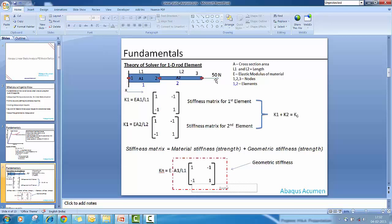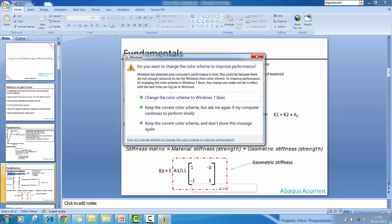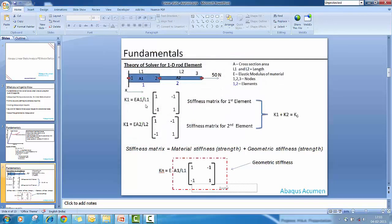When you define this problem into finite element environment, it creates a stiffness matrix for each element. Element number one is in blue. For element one, we have this stiffness matrix: EA1/L1 times the matrix [1, -1; -1, 1]. This is a standard matrix which accounts for the coordinates of the element. E is elastic modulus, A1 is the cross section, and L1 is the length of this first element.